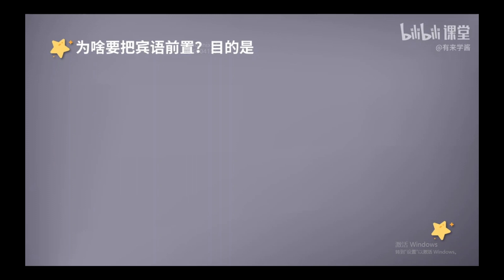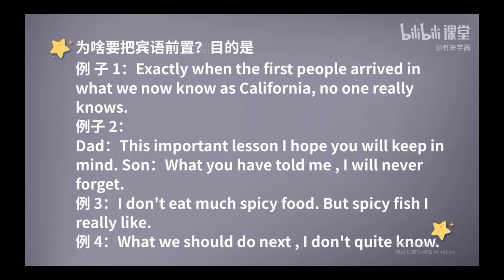在英文里贯穿始终的一种思维就是先判断后细节，也就是说英语中在信息的排布上是先主后次。因此如果宾语的内容很重要、要被突出强调的时候，就会把宾语给提前。我们来听一下下面这句话：Exactly when the first people arrived in what we now know as California, no one really knows. 第一批人类是如何抵达我们现在所知道的加利福尼亚州，没有人真正知道。正常语序应该说：No one really knows exactly when the first people arrived in what we now know as California.